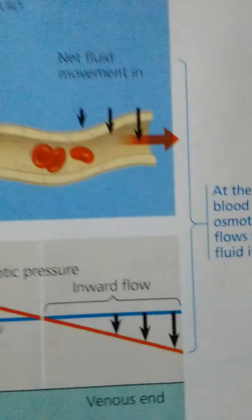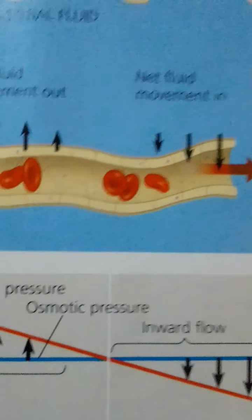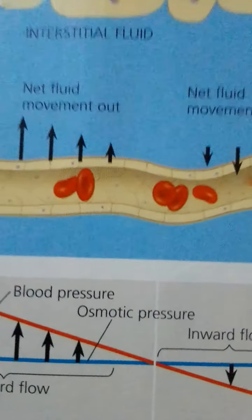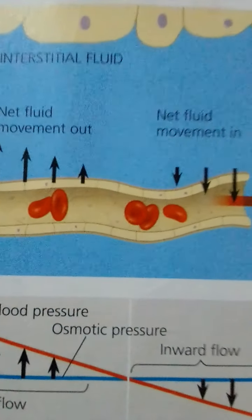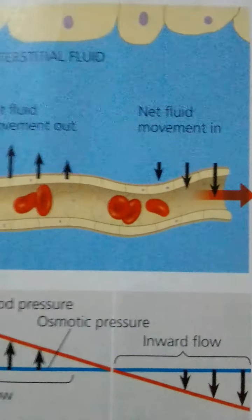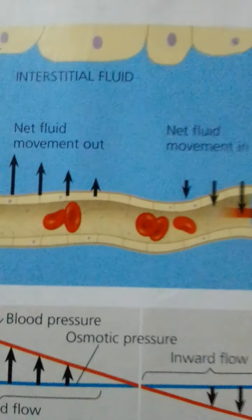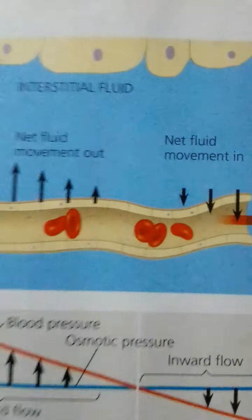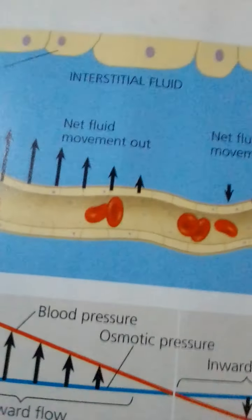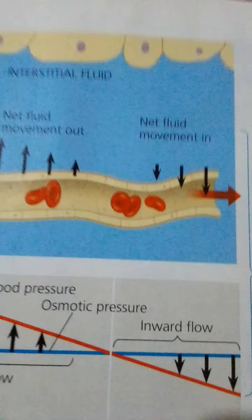Lymphatic vessels, like veins, have valves that prevent the backflow of fluid toward the capillaries. Rhythmic contractions of the vessel walls help draw fluid into lymphatic capillaries. Also like veins, lymphatic vessels depend mainly on the movement of skeletal muscles to squeeze fluid toward the heart. Along the lymphatic vessels are organs called lymph nodes. By filtering the lymph and attacking viruses and bacteria, lymph nodes play an important role in the body's defense. When the body is fighting an infection, these cells multiply rapidly and the lymph nodes become swollen and tender, which is why your doctor checks your neck for swollen lymph nodes when you feel sick.